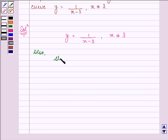Also, we are given slope as equal to 2. So we have dy by dx equal to minus 1 over (x minus 3) squared. Right?